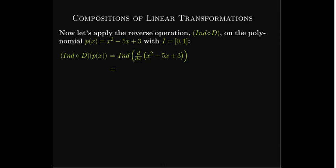Here we take the derivative first, then form the indefinite integral. Using the power rule, the derivative is 2x - 5. Then we take the integral from 0 to x of (2t - 5) dt, using a dummy variable of integration. After evaluation, that leaves us with x² - 5x. We have lost the constant: we get +0 instead of +3. So we started with a polynomial, took its derivative, then took the indefinite integral, and did not get the same polynomial back.